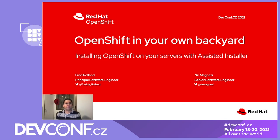Hello, my name is Nir, and I'm here together with Freddie. We are both software engineers at Red Hat OpenShift KNI Edge Group. Today, I would like to share with you a new web-based solution called Assisted Installer. Assisted Installer simplifies and reduces the amount of prerequisites needed to set up an OpenShift cluster, making it even easier to deploy on your bare metal servers and virtual machines.